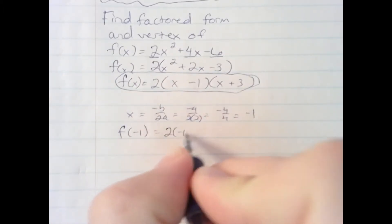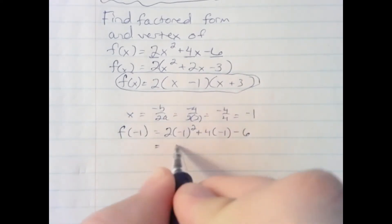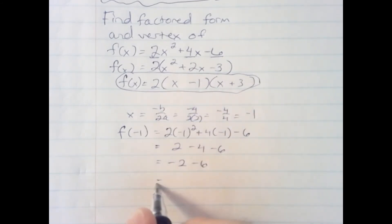2 times negative 1 squared plus 4 times negative 1 minus 6. This would be 2 minus 4 minus 6, negative 2 minus 6, negative 8.